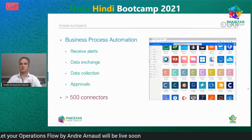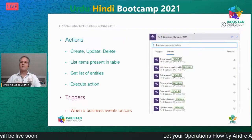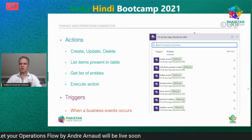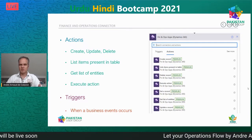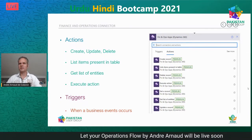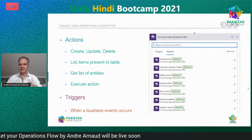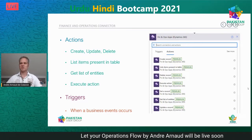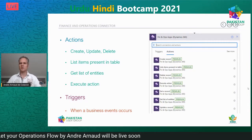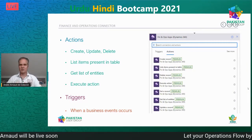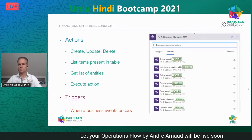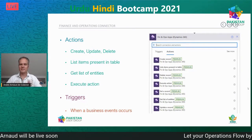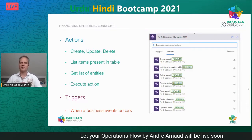When talking about the Finance and Operations connector in Power Automate, you can do CRUD actions: create a record, update a record, delete records. Using 'List Items Present in a Table' you can read data and move it to other applications like a SharePoint list or Excel file, or create an email. There's also 'Get a List of Entities' which returns the available entities, and 'Execute Action' which I'll explain shortly.